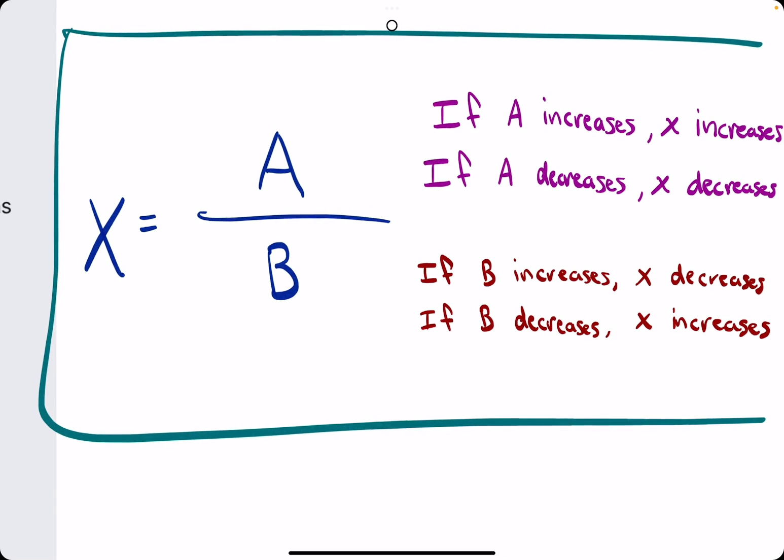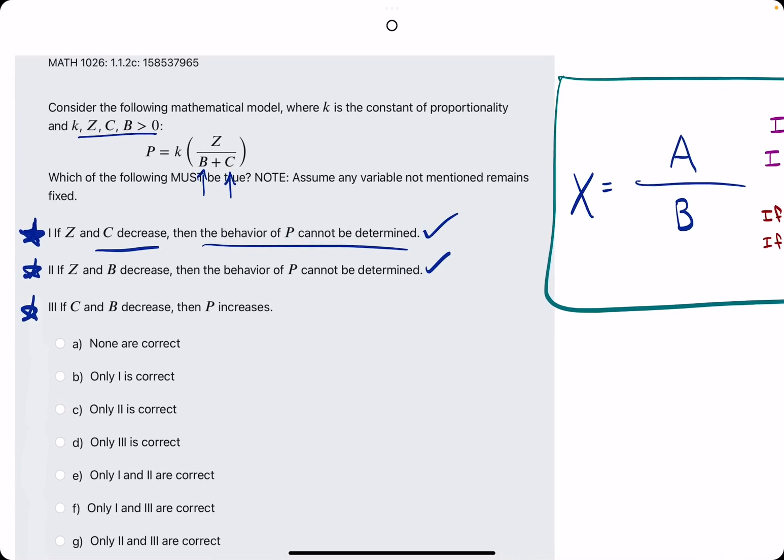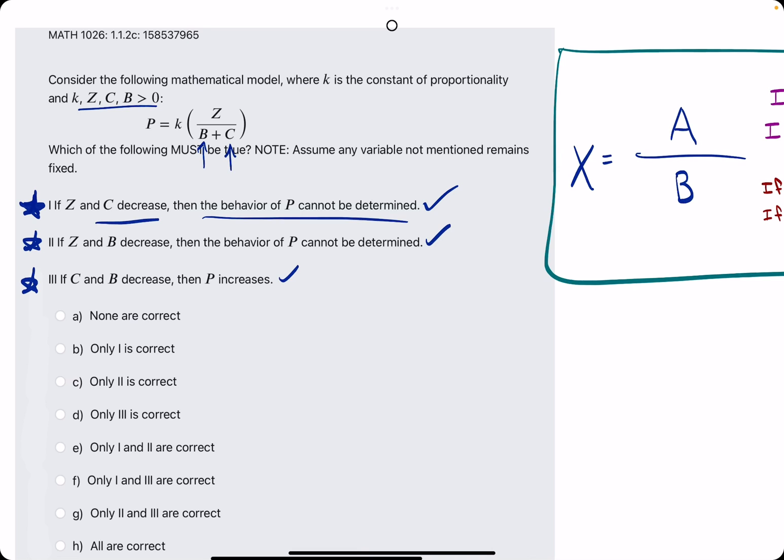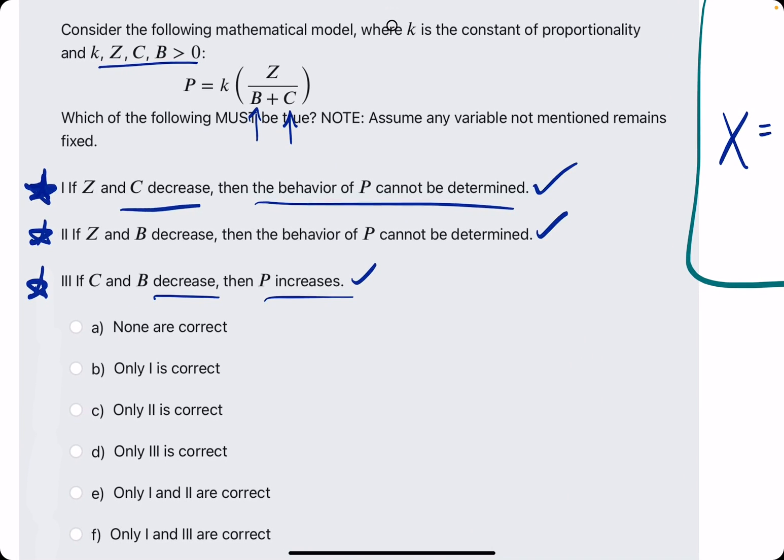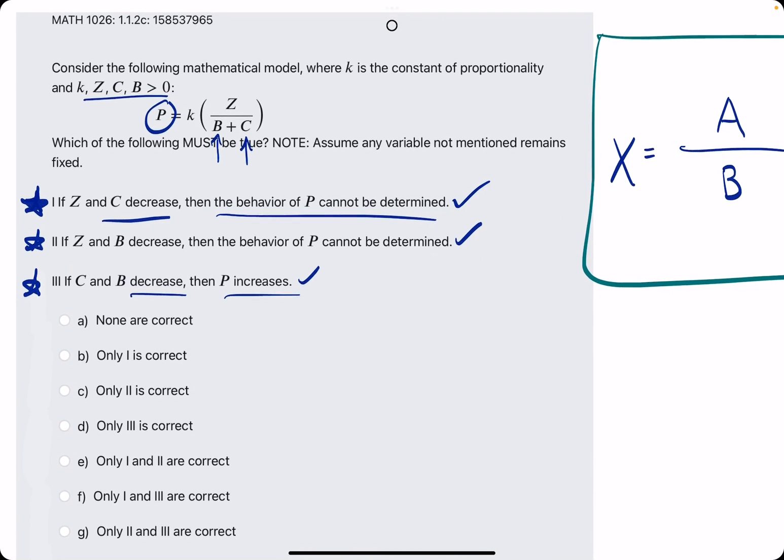Well, looking at this, if B decreases, then the overall value should increase. That is a true statement because both C and B are in the denominator. And the denominator values have an inversely proportional relationship to the overall value, in this case P.